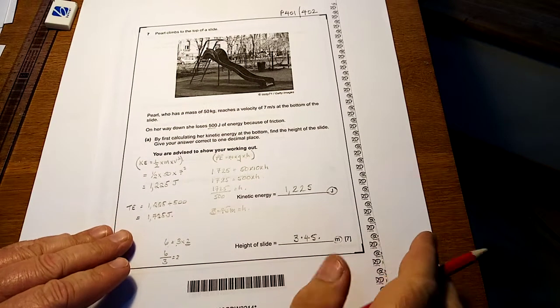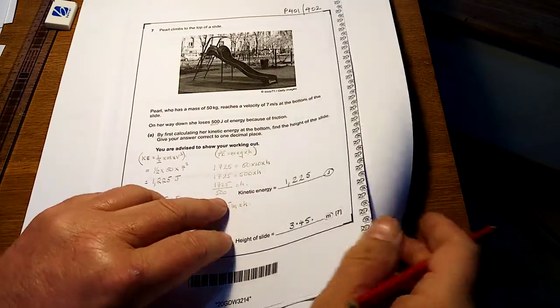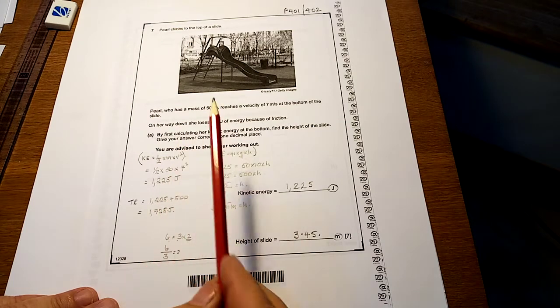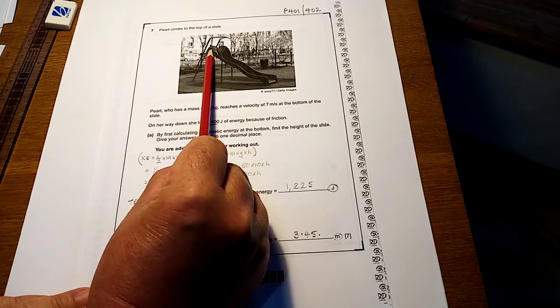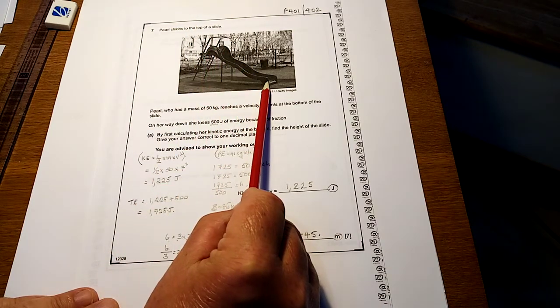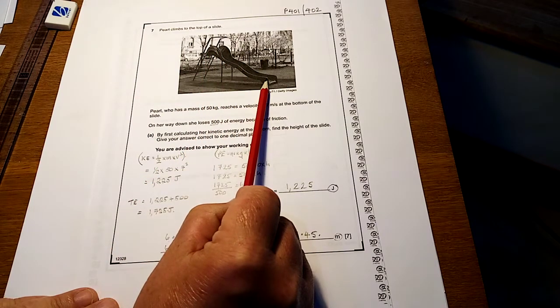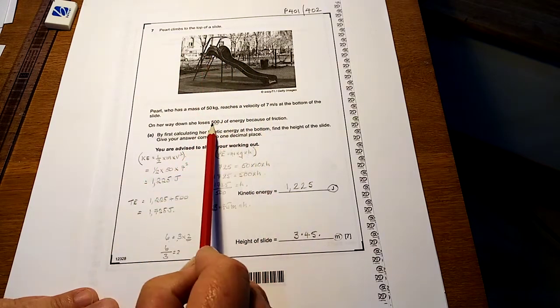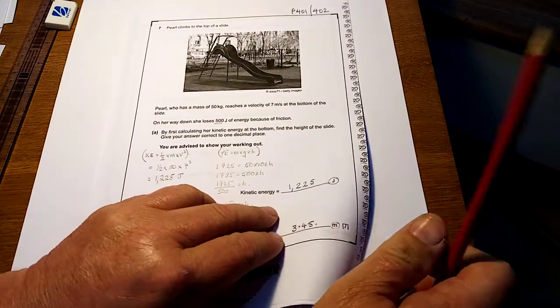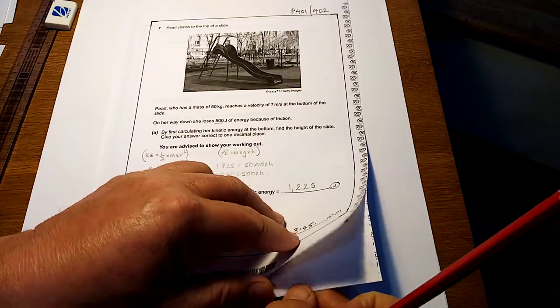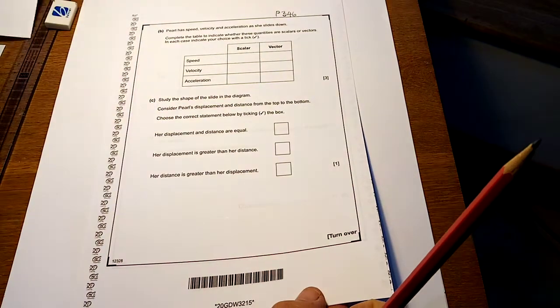So that's that question done. Remember there's your conservation of energy. The energy at the top is equal to the energy at the bottom. The potential energy at the top is equal to the kinetic energy at the bottom, plus don't forget the 500 joules that was used up as friction, as energy.